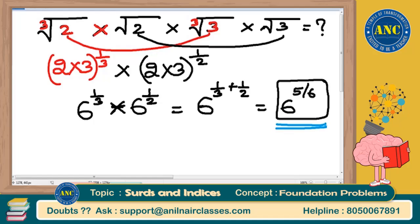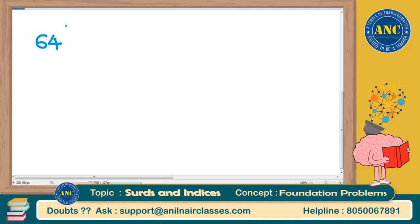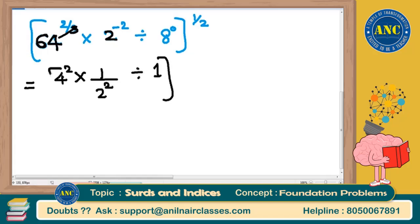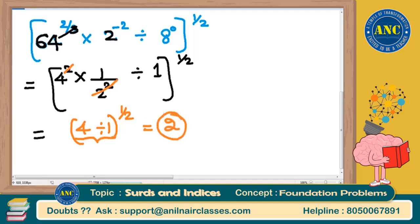Next: [64 power 2 by 3 × 2 power minus 2 ÷ 8 power 0] whole power 1 by 2. 64 = 4 cube, so 4 cube power 2 by 3 = 4 squared = 16. 2 power minus 2 = 1 by 4. 8 power 0 = 1. So we have [16 × 1/4 ÷ 1] power 1 by 2 = [4] power 1 by 2 = square root of 4 = 2.